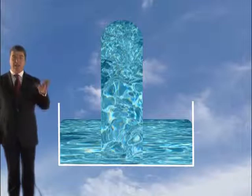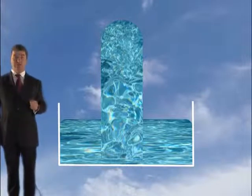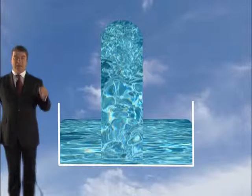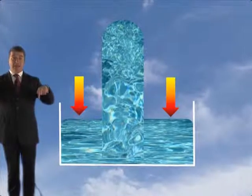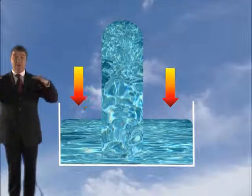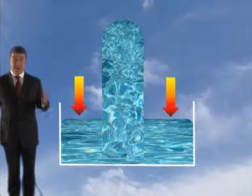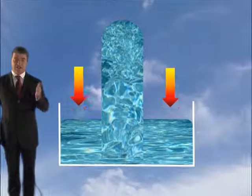If you had a tube sealed at one end, filled it with water, and then turned it upside down, would it run out? No. Why? It's because it would be kept there by the pressure from the air on the sides. The pressure of the air on the top of that liquid would keep the water inside the tube — it wouldn't pour out, because the column of water is suspended by the atmospheric pressure on the liquid surface.